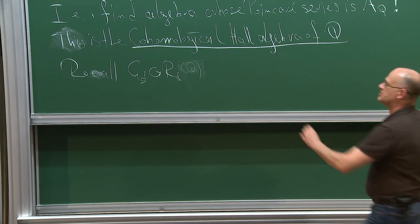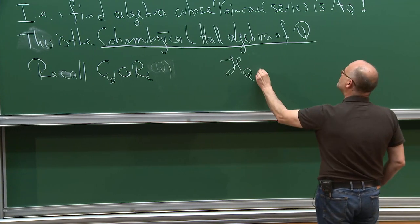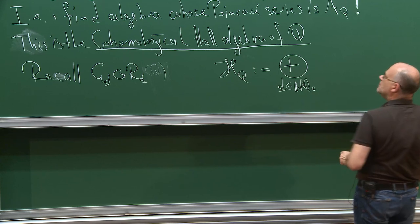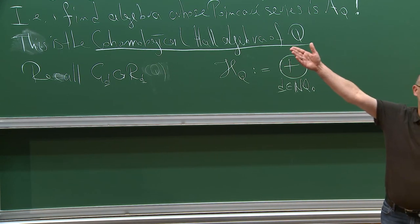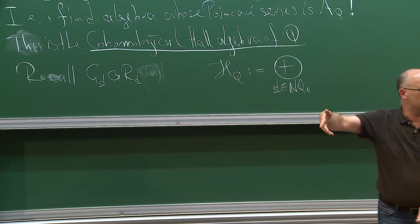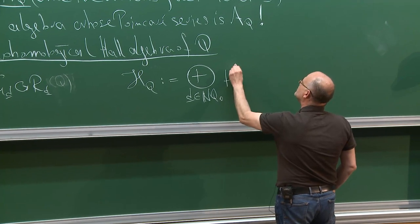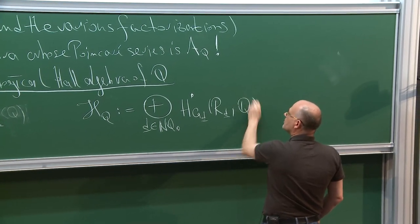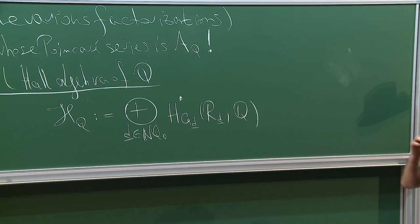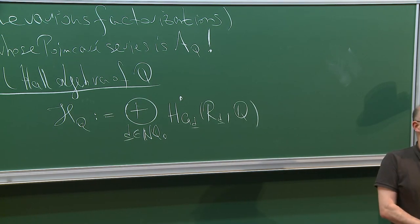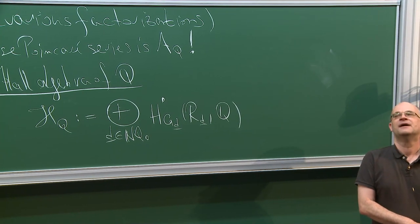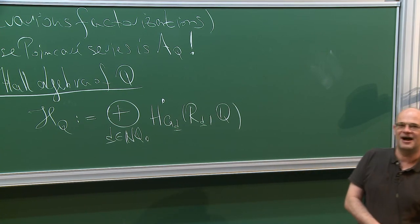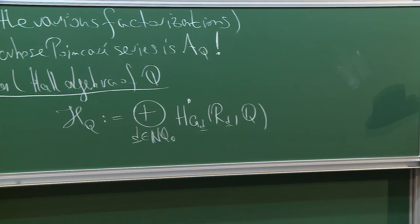Here's the candidate for the Cohomological Hall Algebra, which we'll write as curly H of Q. Take the direct sum over all dimension vectors. Just as in the motivic generating function we took the sum over all dimension vectors of the motive of the quotient stack, here we take the equivariant cohomology of the representation space with rational coefficients — the direct sum of all equivariant cohomologies of these spaces. This is the underlying space. We will see that this has more or less nothing to do with the quiver; the quiver comes in only through the multiplication.